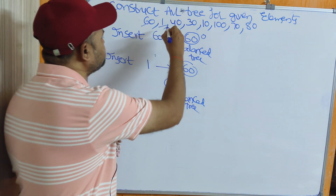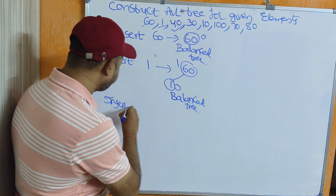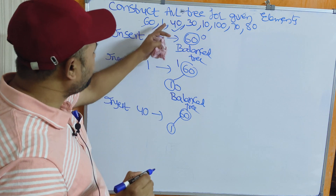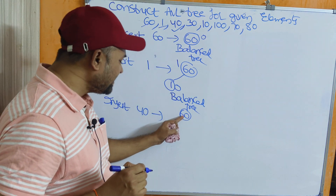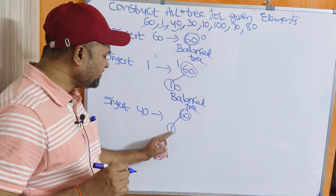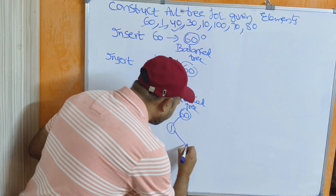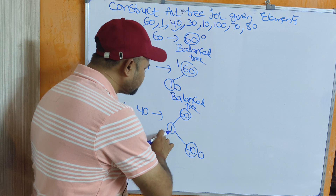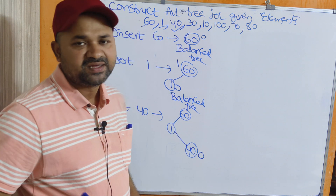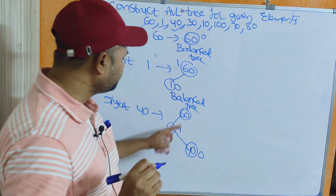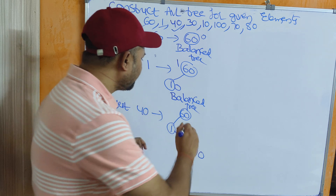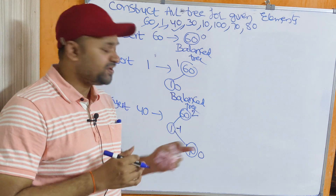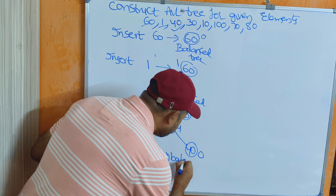Next, insert 40. The root node is 60, and 60's left child is 1. Compare 40 with 60 — 40 is less than 60, so go left. Compare 40 with 1 — 40 is greater than 1, so 1's right child is 40. Calculate the balance factor: 40's balance factor is 0; 1's balance factor is 0 minus 1 = -1. For node 60: left subtree height is 2, right subtree height is 0, so 2 minus 0 = 2. So 60's balance factor is 2, meaning this is an unbalanced tree.